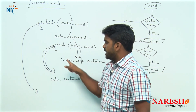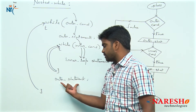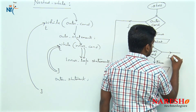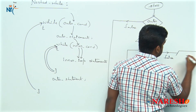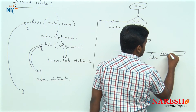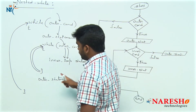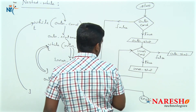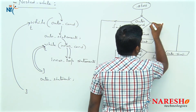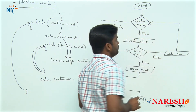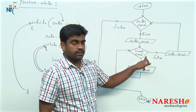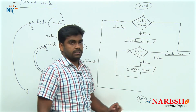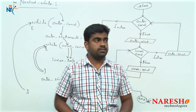Suppose if the inner condition has failed — is false — then it will execute the remaining outer statements. Whenever the inner condition is false, the remaining outer statements execute. After execution of outer statements, again it will go and check the outer condition. If the inner condition has failed then it goes and checks the outer condition. If the outer condition has also failed then directly it will terminate. This is the syntax and this is the flow.